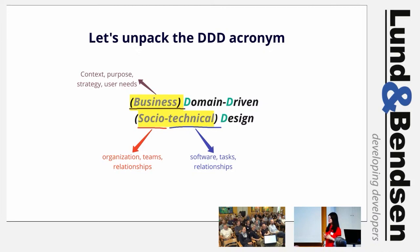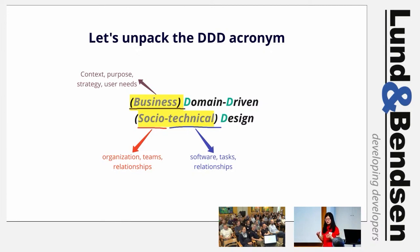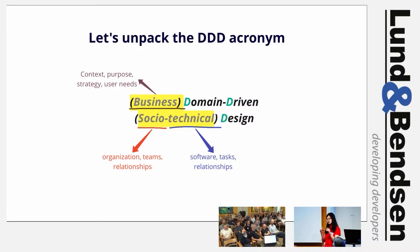Fast-forward 20 years: the software ecosystem has reached such a level of complexity and interconnectedness that we not only need to design those software systems, but also need to manage the organizational complexity we have generated around that software. We have complicated engineering systems embedded in complex social systems. So DDD has shifted from having a software-centric focus to a socio-technical focus.